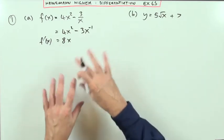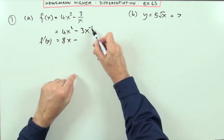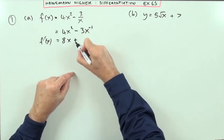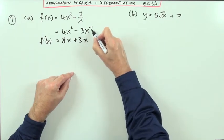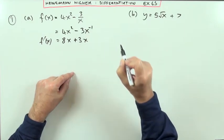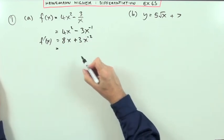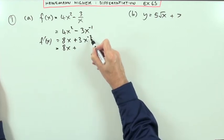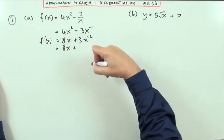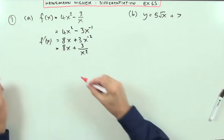Take one off the power, it goes down to 1, but I don't need to show a 1. Next one, multiply by the power, so negative 1 times negative 3 will make it positive 3. Take one off the power, 1 away from negative 1 makes it actually negative 2. Then, put it back the way you found it. So 8x means 8x, but x to the negative 2 means power 2 underneath. So I'll put the 3 on top and the x squared underneath.